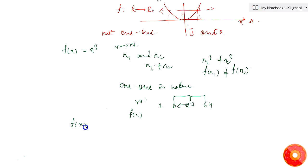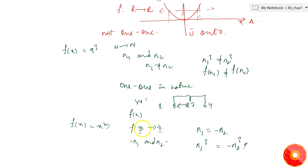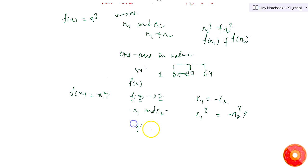Now f(x) = x³ is given but mapping from integers to integers. Previously for f(x) = x² from ℤ to ℤ, f was not one-one and not onto. Here, if n1 and n2 are different, even if n1 equals minus n2, we get n1³ equal to minus n2³, which are still different. So no two elements have the same image, and this function f(x) = x³ mapping from ℤ to ℤ is one-one in nature.